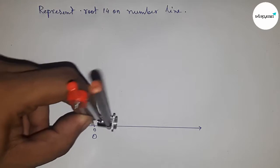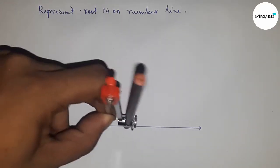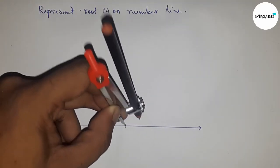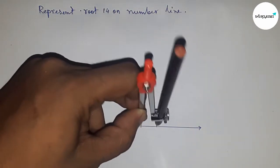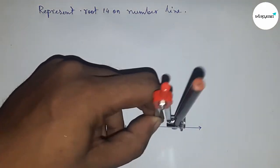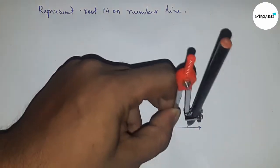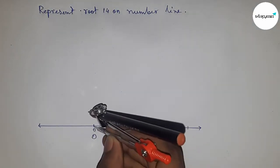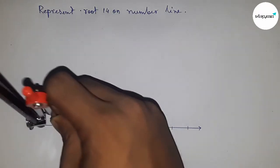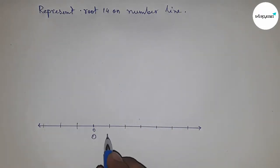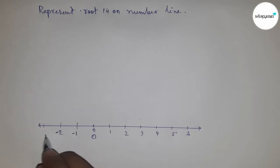Next, mark all the numbers on the line by taking any length with a compass. This is called the unit length, meaning one unit. Mark the numbers: one, two, three, four, five, six, and on the other side minus one, minus two, minus three, and so on.